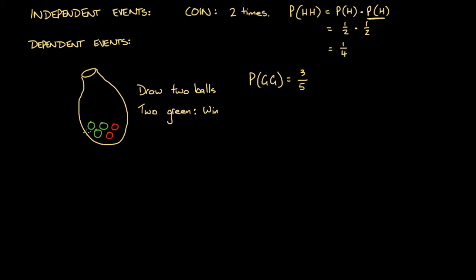Now imagine that green ball is out of the bag. You reach back in and draw another ball. You might think the probability of getting green is still three over five, but that's not true because that green ball is no longer in the bag. On the second draw there are only two green balls remaining out of four balls total, so the probability is two over four.